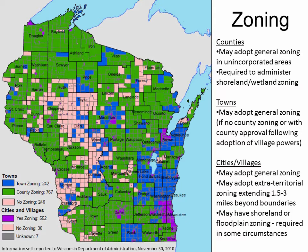Not shown on this map are other special purpose forms of zoning — for example, shoreland zoning, floodplain zoning, and farmland preservation zoning. Counties are required by the state to exercise shoreland zoning in unincorporated areas, and towns cannot opt out of shoreland zoning. Shoreland wetland zoning and floodplain zoning is also required of counties, cities, and villages that have been issued wetland and floodplain maps by the state. Farmland preservation zoning is optional, but allows local landowners to claim farmland preservation tax credits.